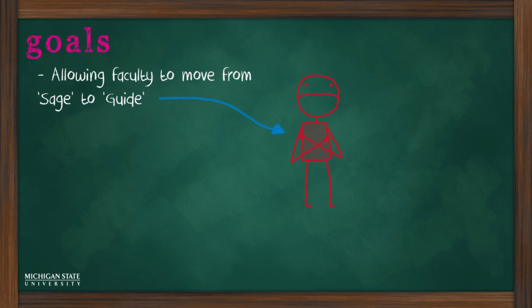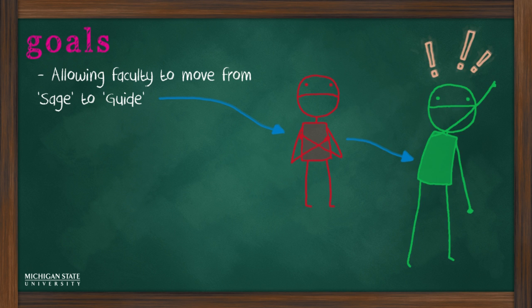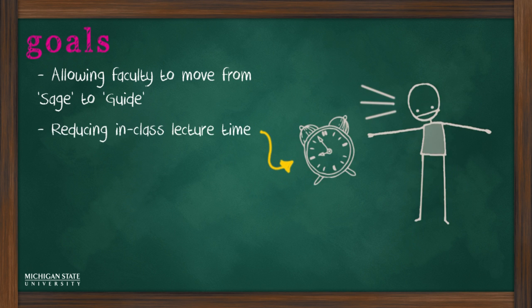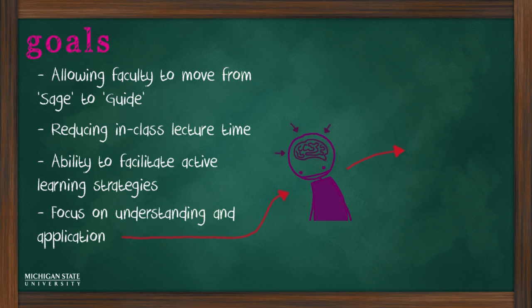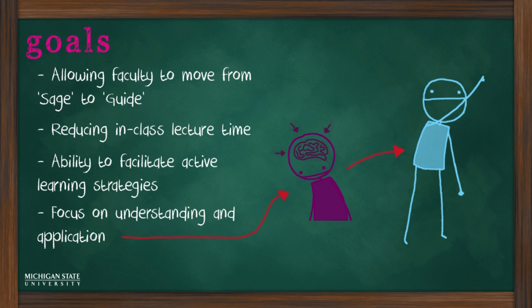Some of the goals of the flipped classroom model include finding an approach that would make it possible for faculty to move from sage to guide, reducing the amount of time spent in class on lecturing, opening up class time for the use of active learning strategies, focusing more on understanding and application than on recall of facts, while not sacrificing presentation of the factual base.